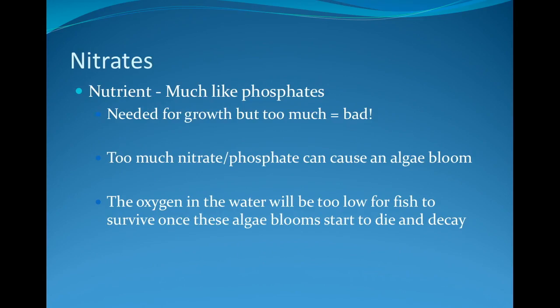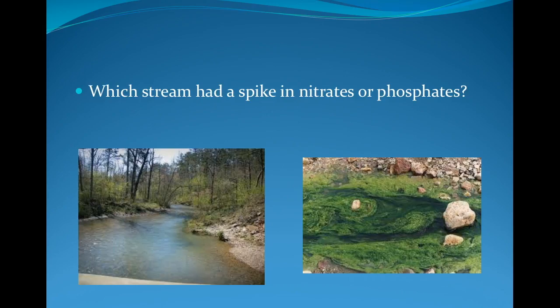Nitrates and nitrites are a nutrient much like phosphorus. Plants need them to grow, but too much can be a bad thing. Too many nitrates and phosphates can cause algae blooms. The oxygen in the water will be too low for fish to survive once these algae blooms start and begin to decay. Looking at these two pictures, which stream is most likely polluted by excess nutrients? Given the increased algae in the picture on the right, we can assume that stream is receiving excess nutrients from runoff.